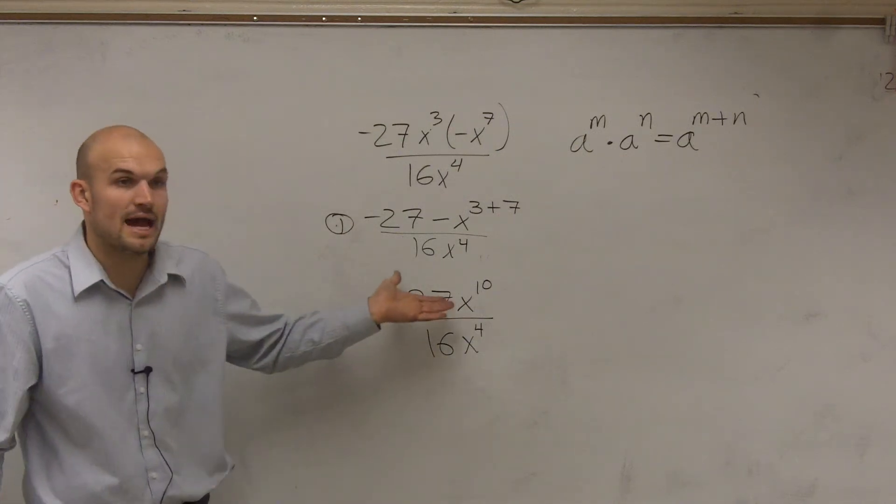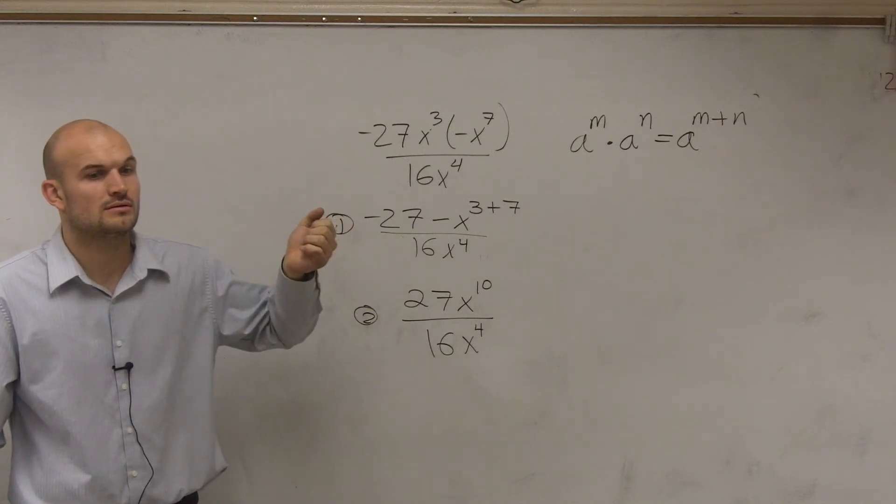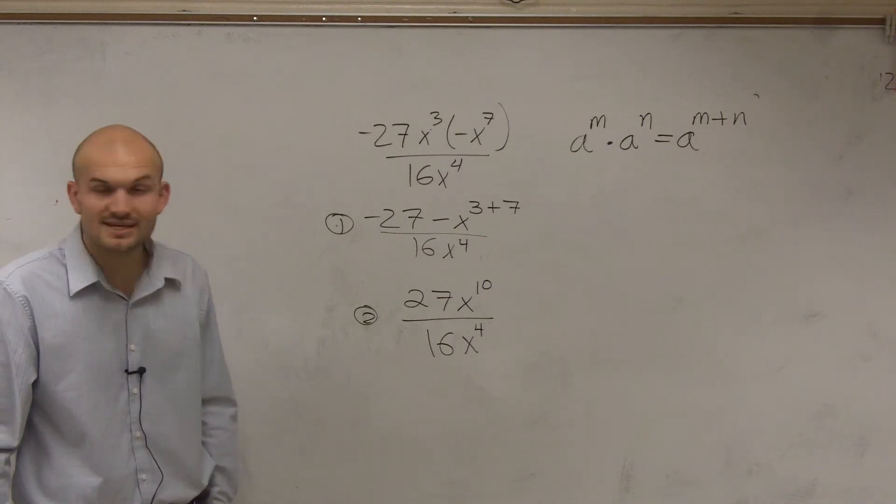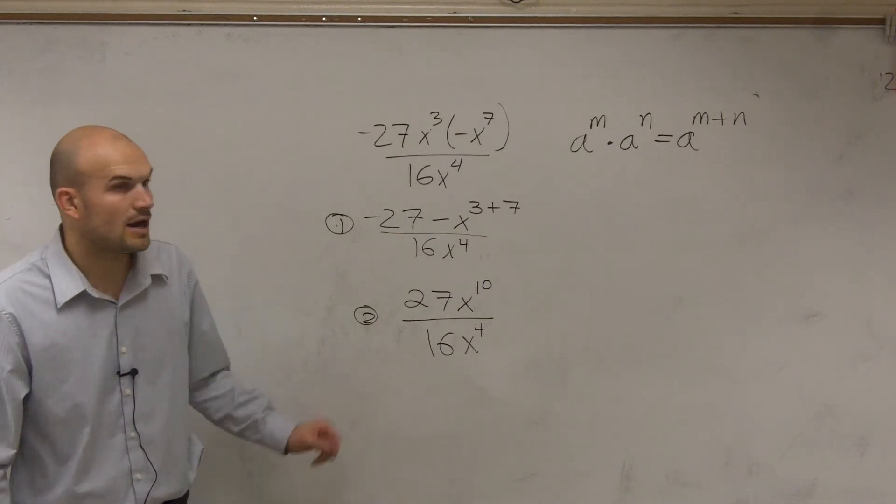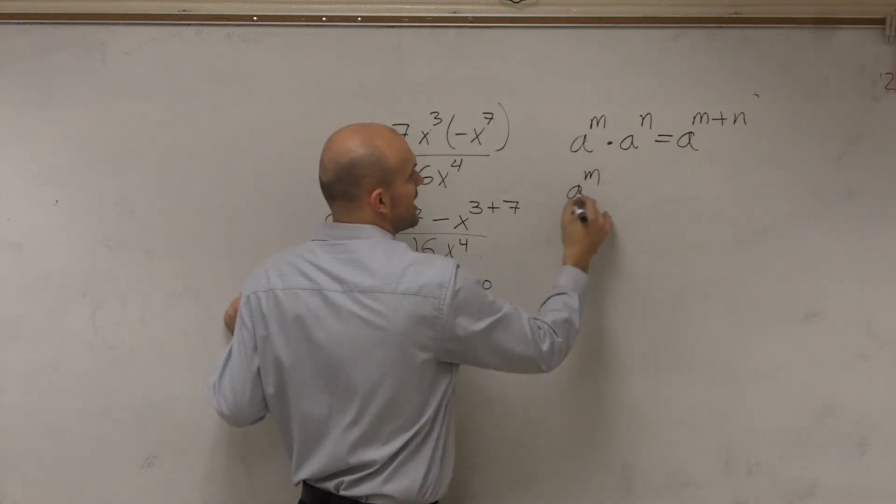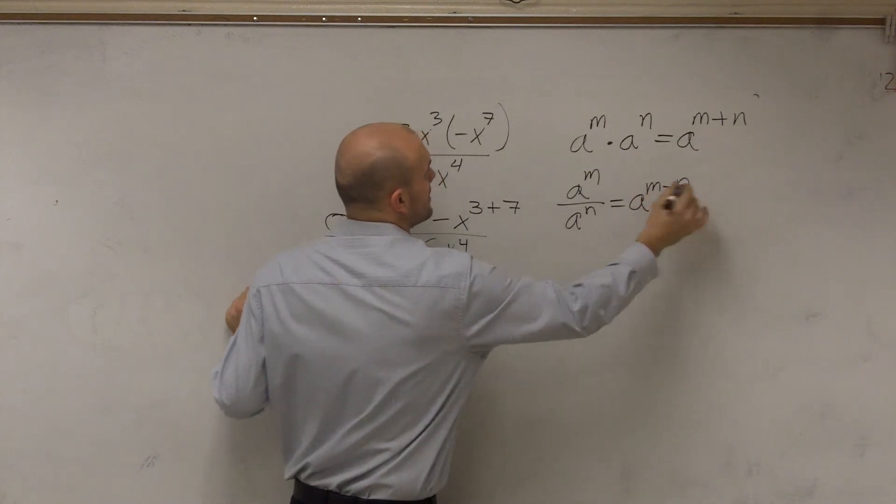Now, step number three is we notice now, we can simplify between these two. Do you have a question on this? I just have a question on this. OK. So therefore, I have 27x to the tenth divided by 16x to the fourth. So now, what you're simply going to do is the next thing you need to know is a to the m divided by a to the n equals a to the m minus n.